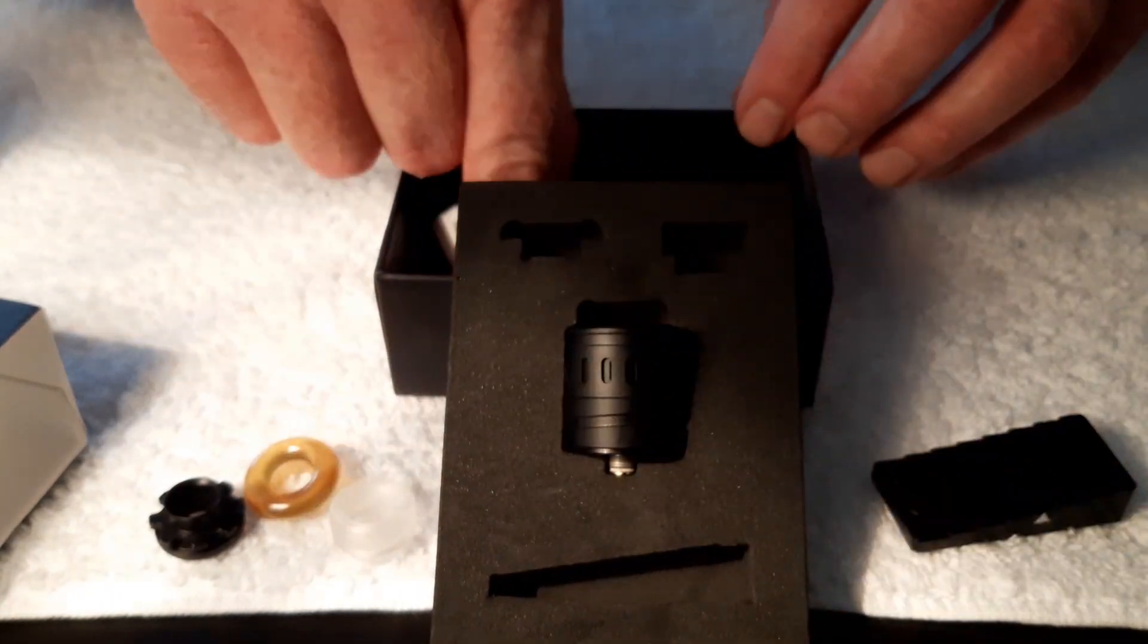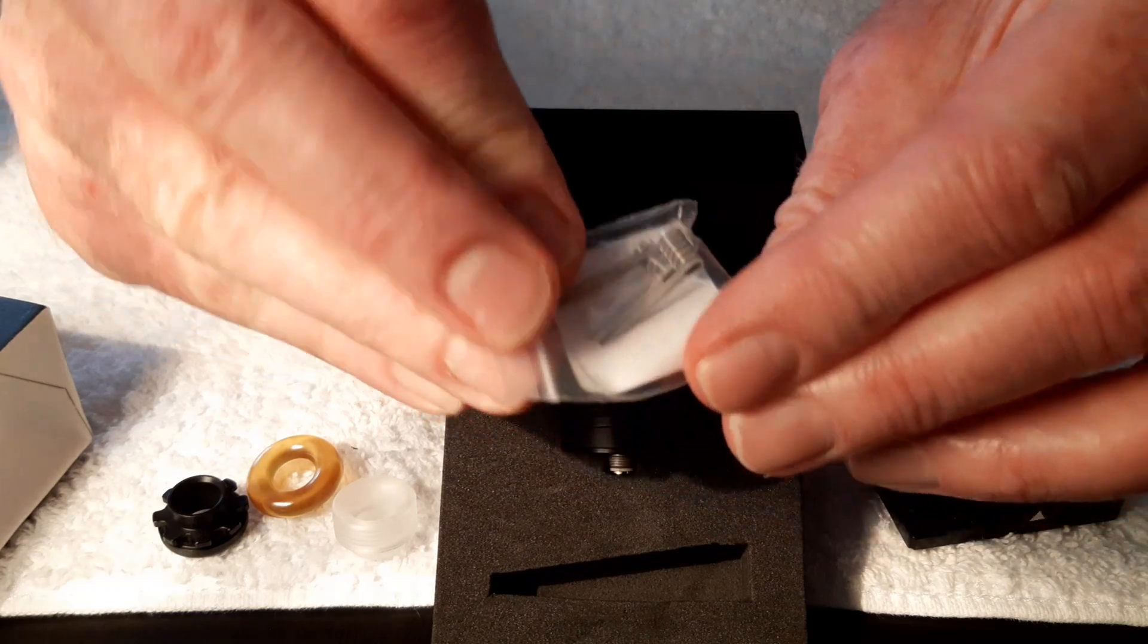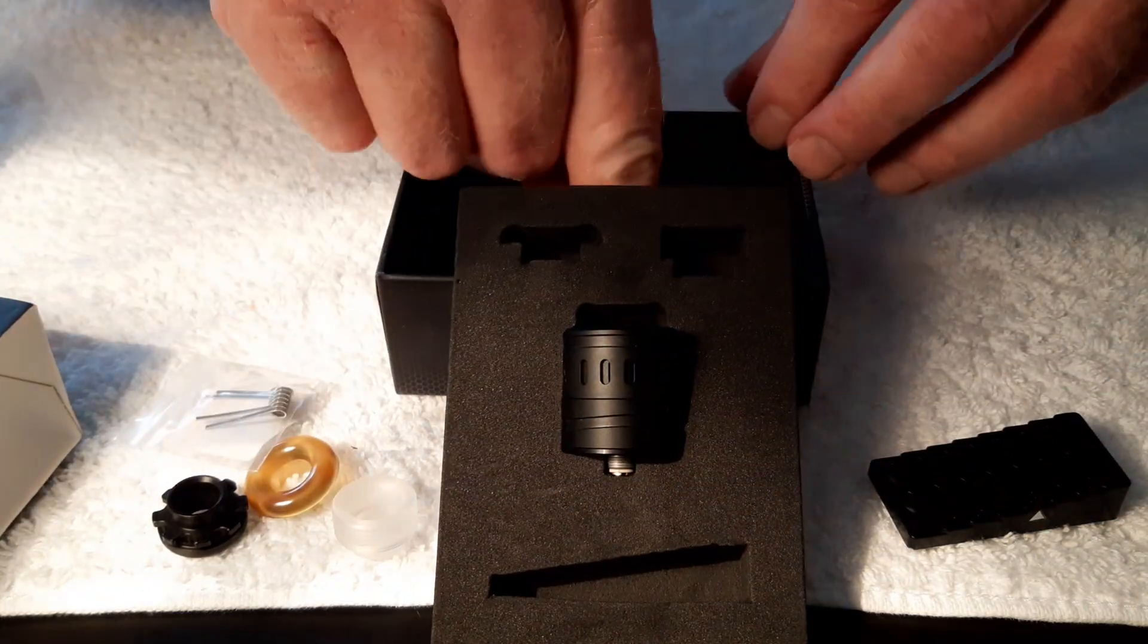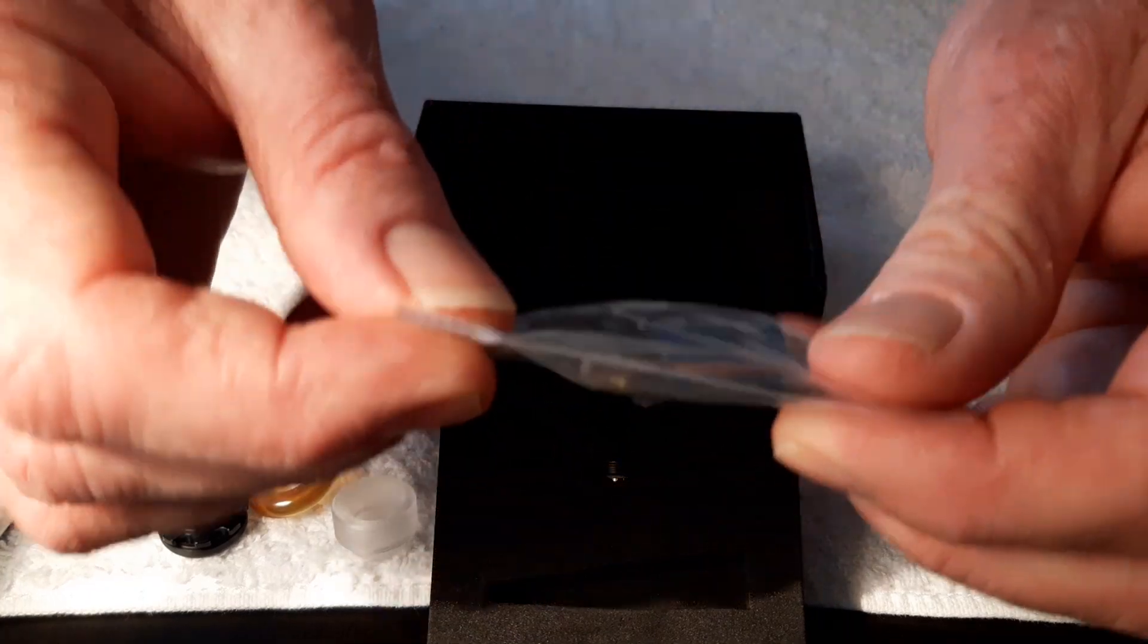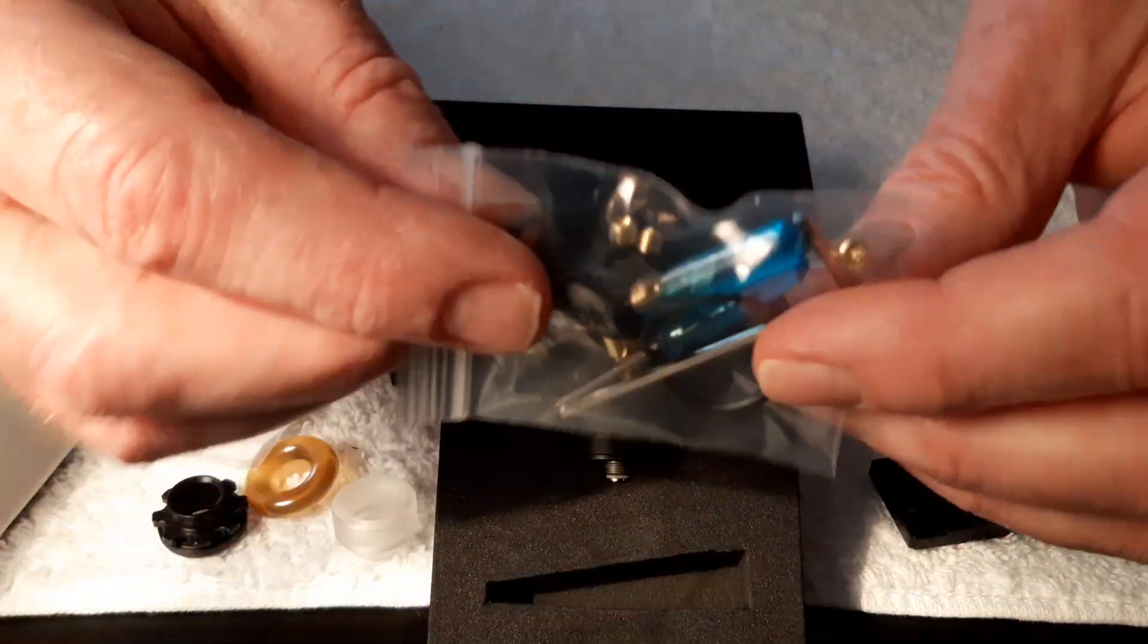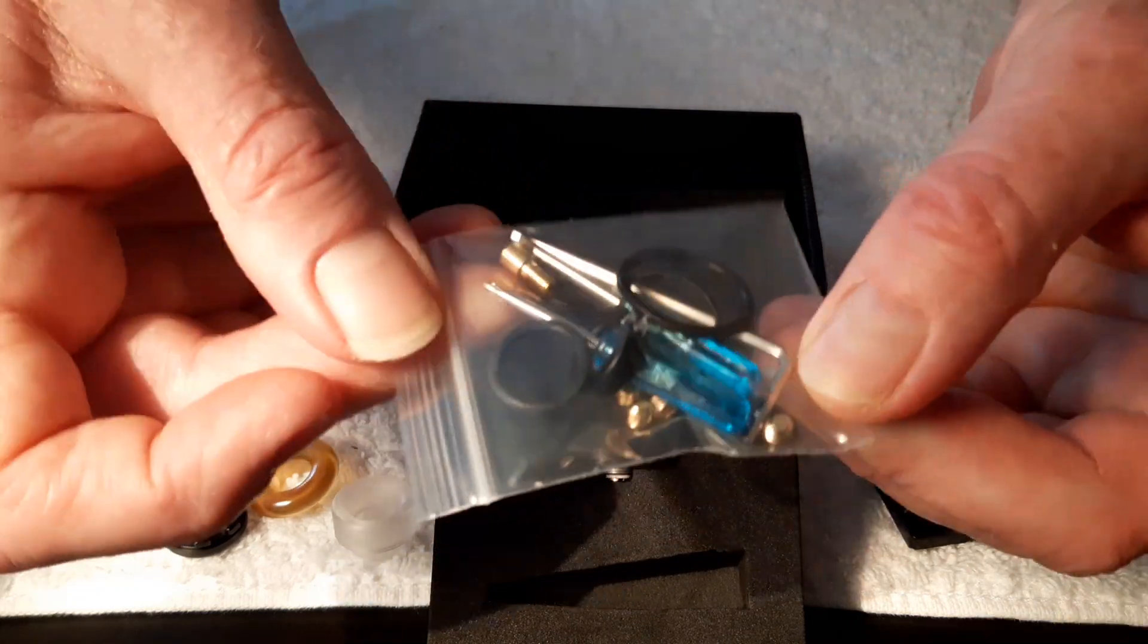Right, there's the little baby. What else we got here? We got a couple of coils as well. Nice. We get a squonk pin, O-rings, two screwdrivers, and this allen key thing.